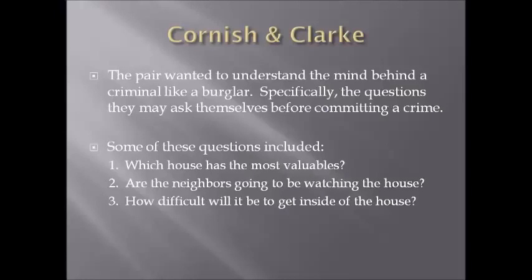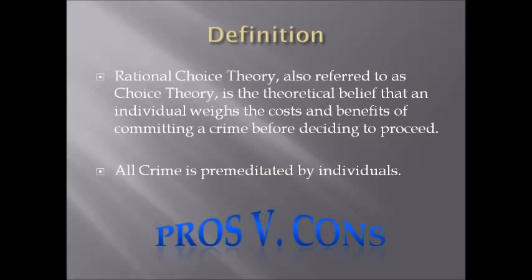Rational Choice Theory, also referred to as Choice Theory, is the notion that an individual weighs the costs and benefits before deciding to commit a crime or not. It further establishes that pretty much all crime is premeditated — nothing is last minute, it's all thought out. This theory provides a macro perspective on why individual criminals decide to commit specific crimes, because people usually engage in crime because it is rewarding, easy, satisfying, or even fun for them.